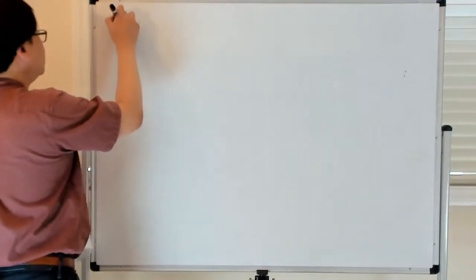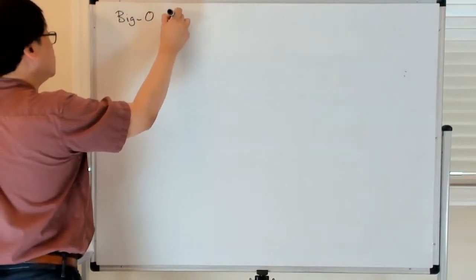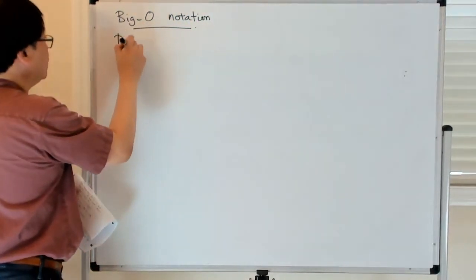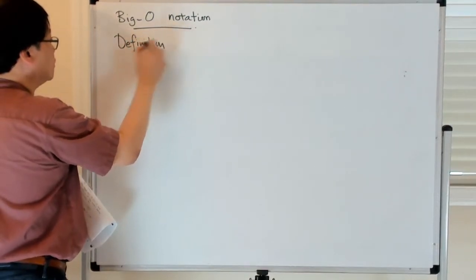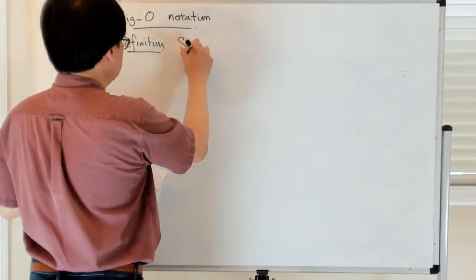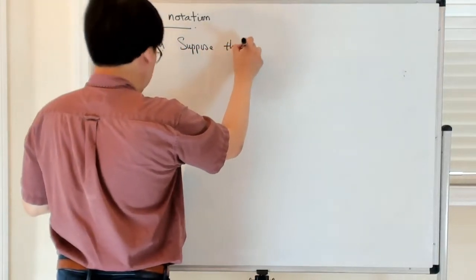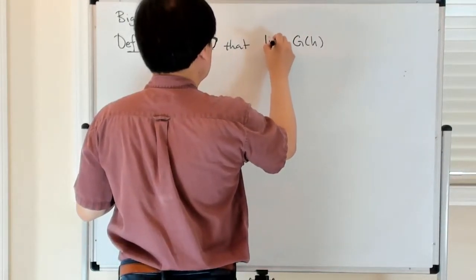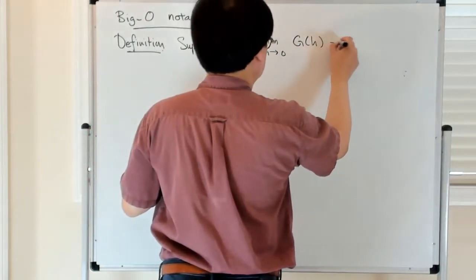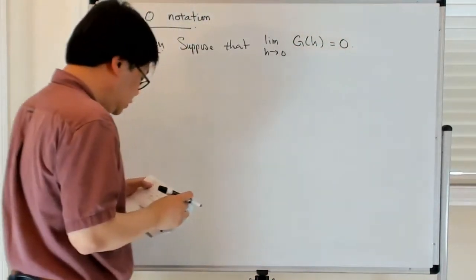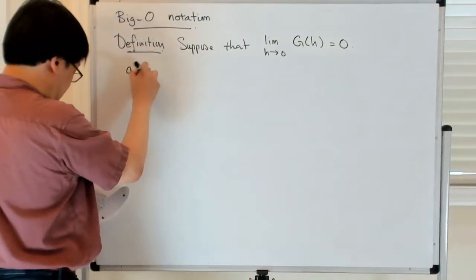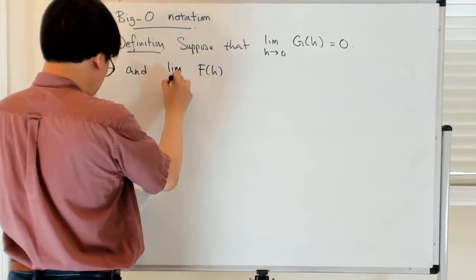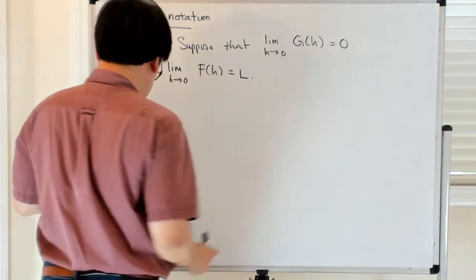So this is big O notation. The definition is as follows. Let's suppose that we have some function g of h, which has a limit as h goes to 0, which is 0. So it goes to 0 as h goes to 0, and we have another function f of h, such that the limit as h goes to 0 of this is l.